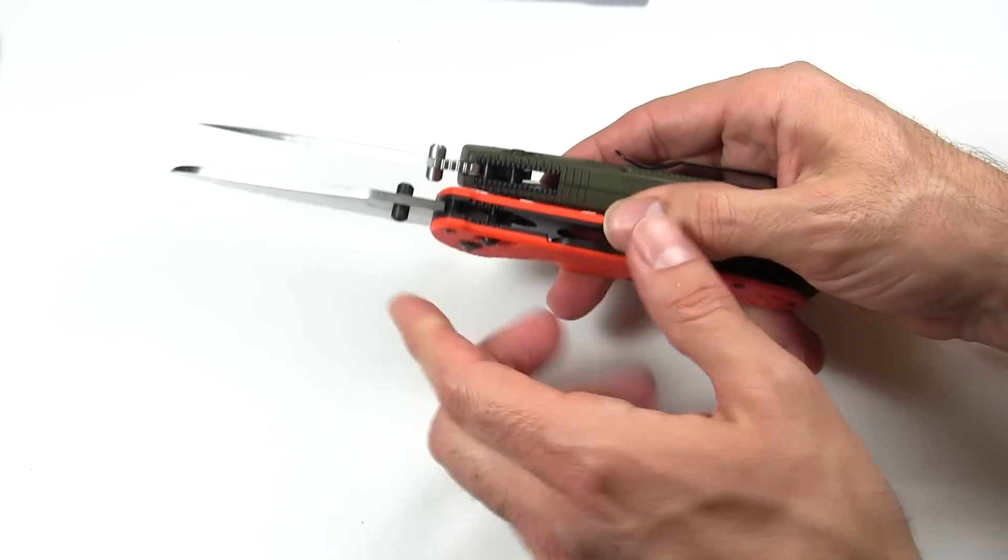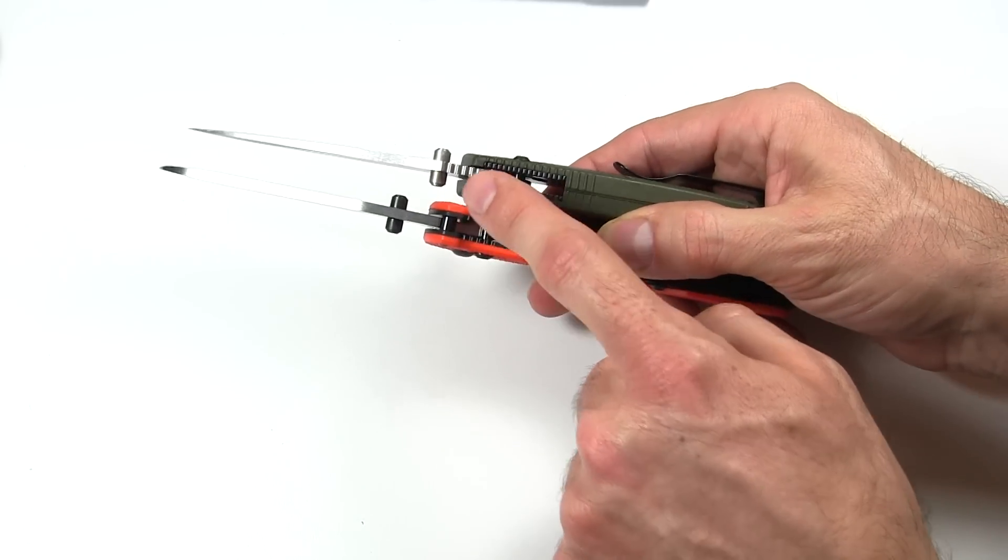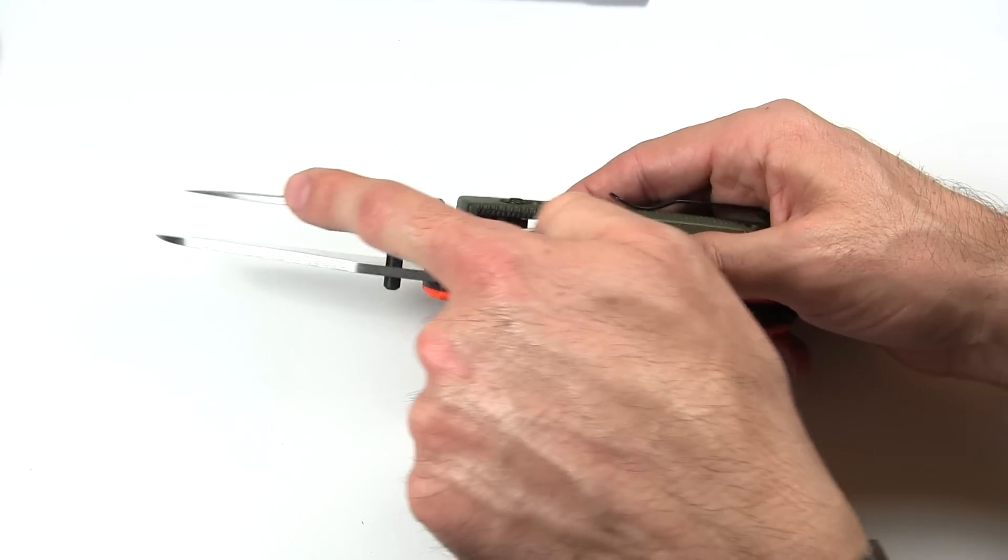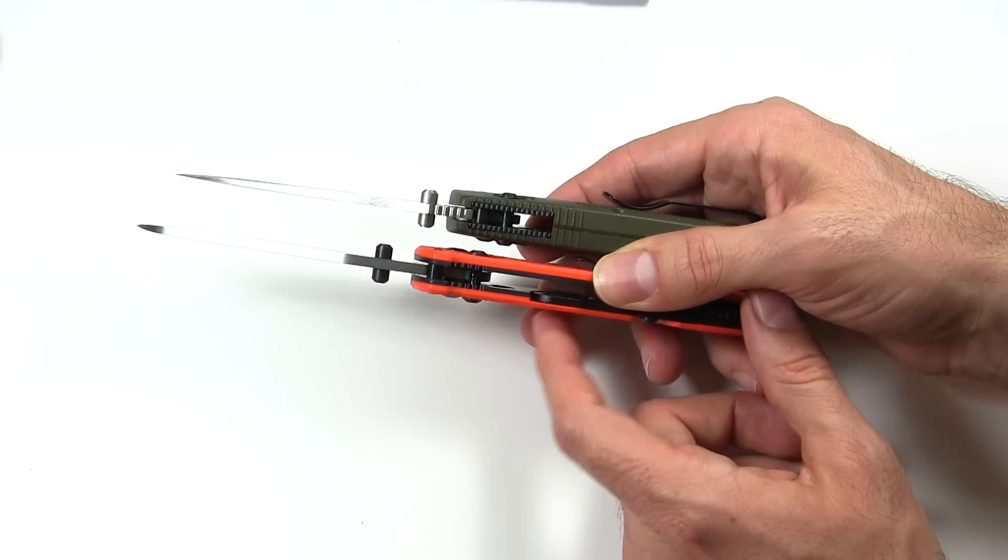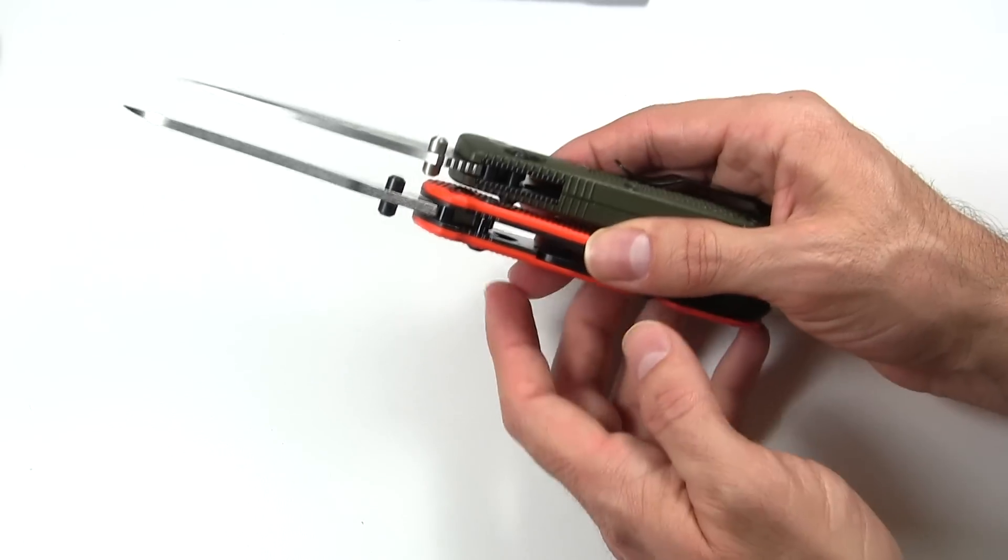Blade thickness is pretty similar back here by the handle, but you can see that the Griptilian really tapers out to a point there, whereas the Triage, with this modified sheep's foot, stays pretty thick all the way out to the edge there.